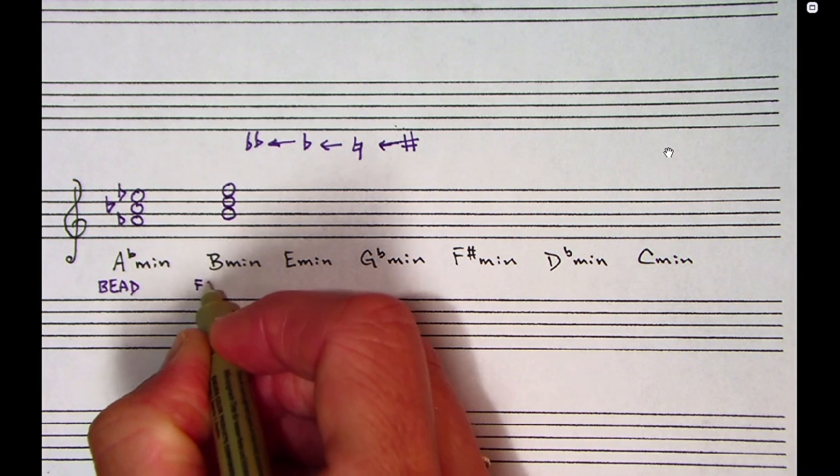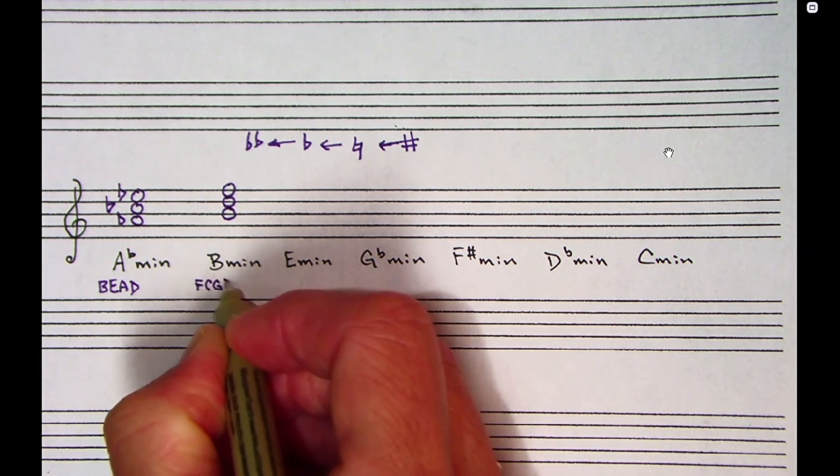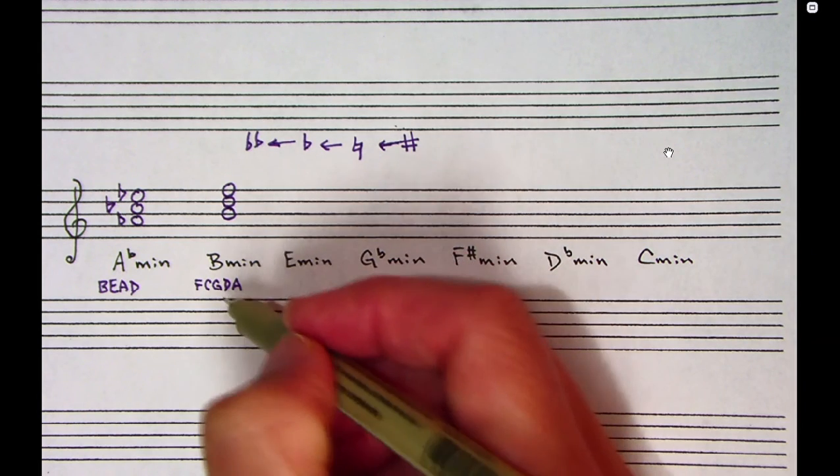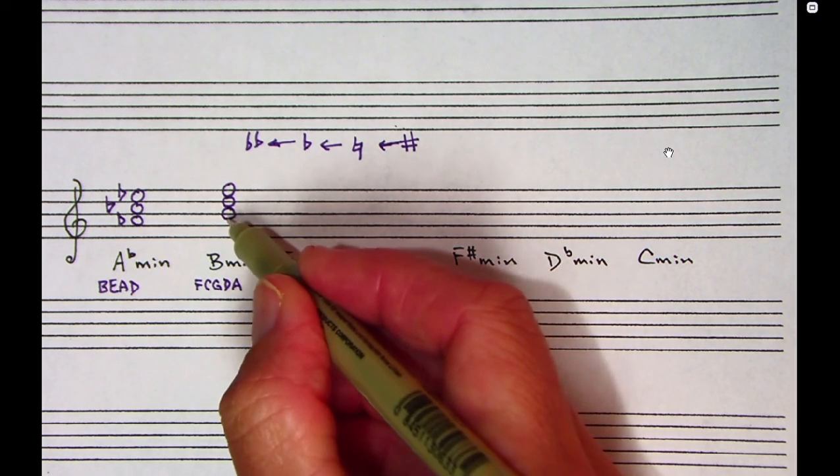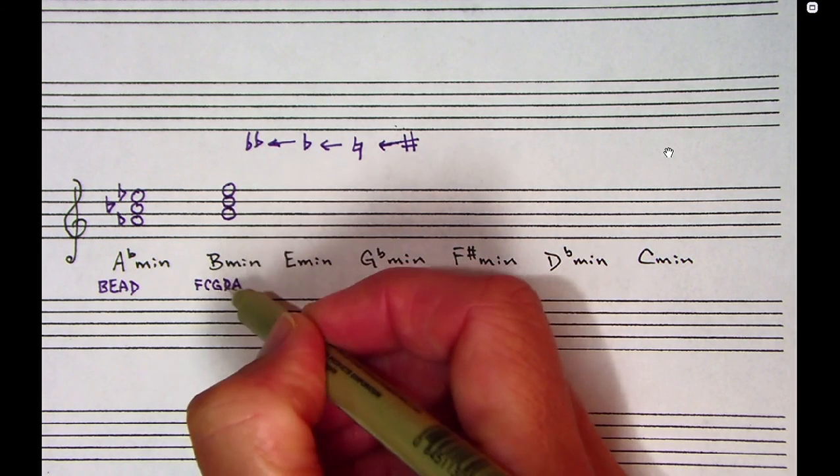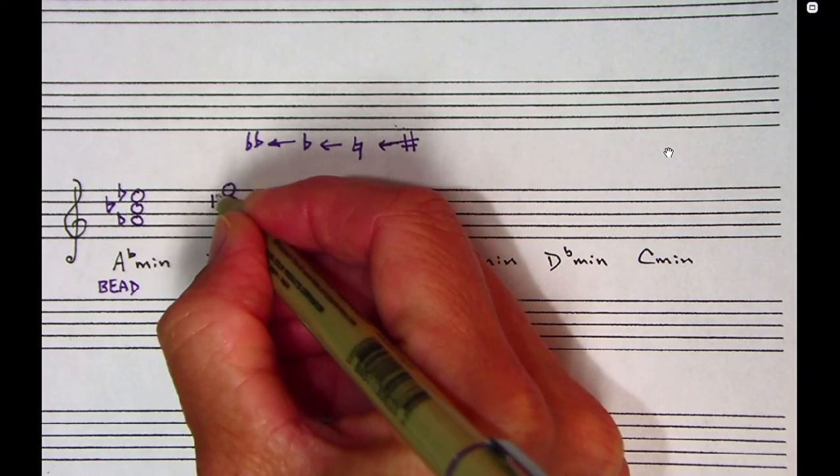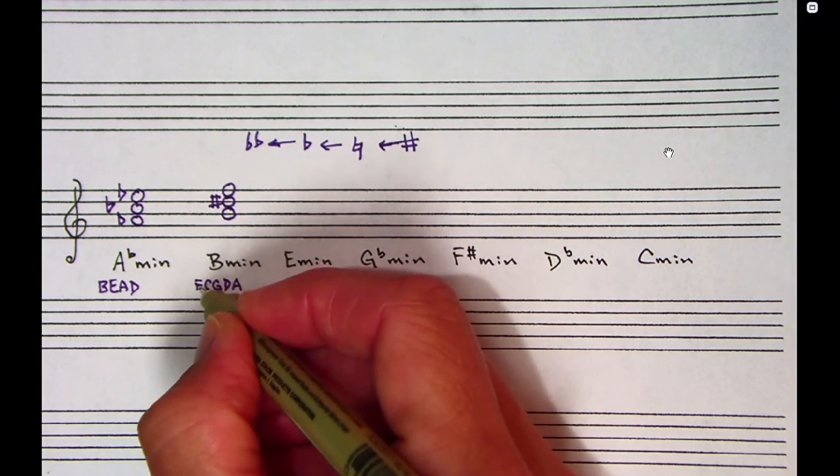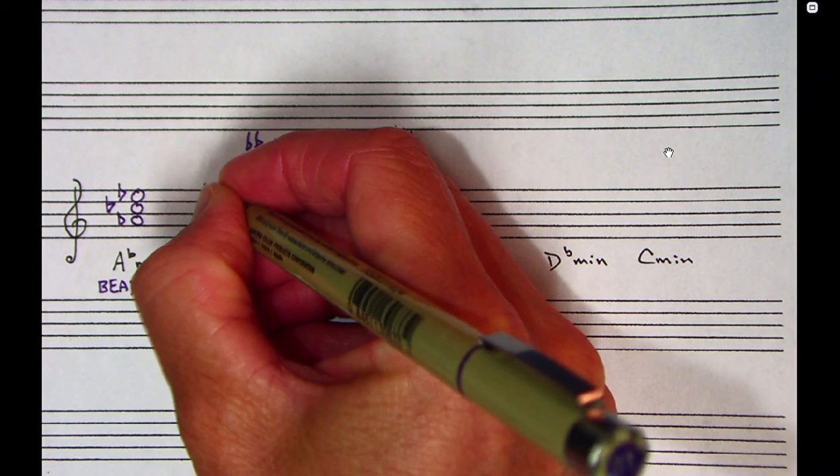I'm going to apply that to my triad. I have a B, it's not listed. I have a D, it is listed, so I'm going to sharp that guy. And I have an F and it is listed as well. I'm going to sharp that guy.